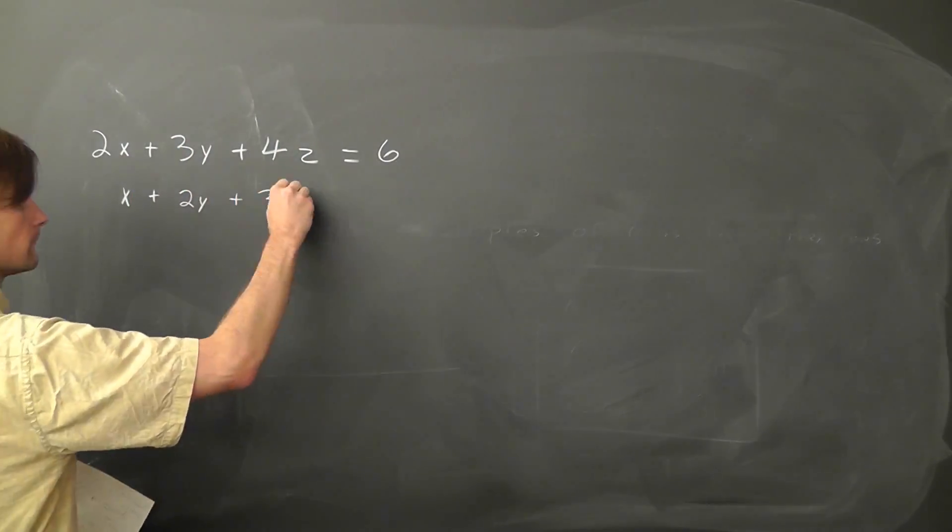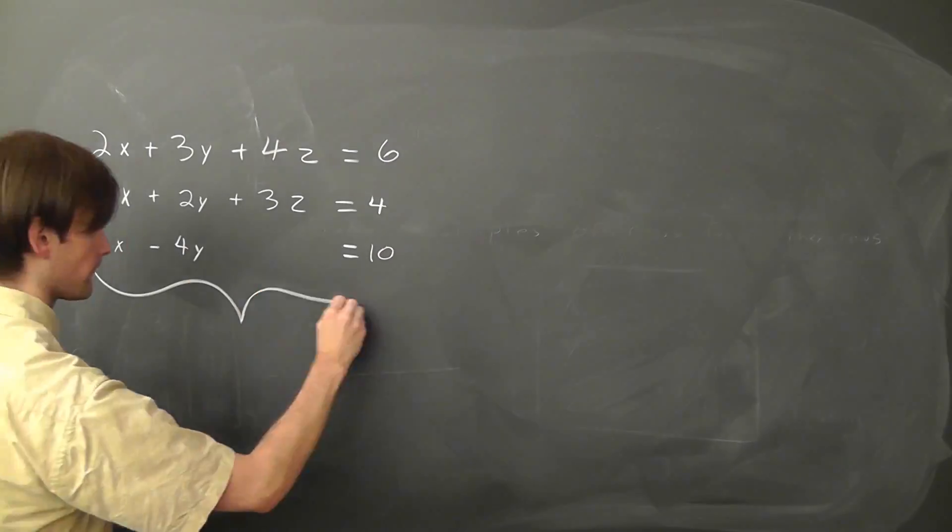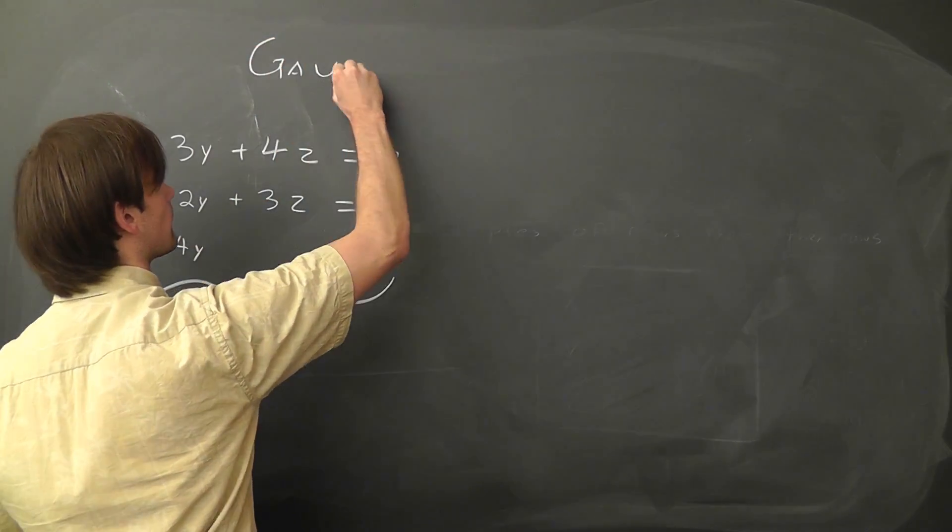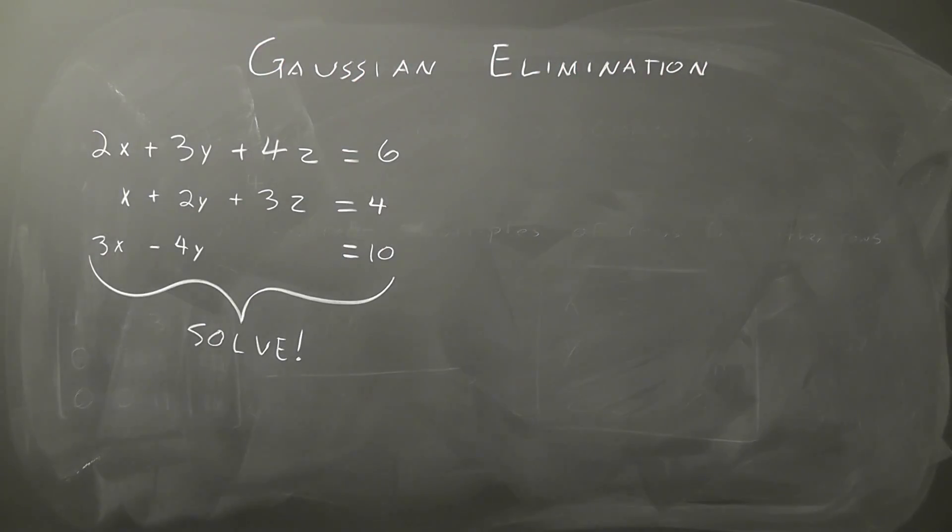Let's say you have a system of equations that looks like this, and you want to solve for x, y, and z. Well, one way to do that is with Gaussian elimination.